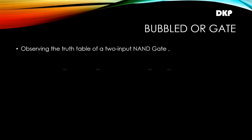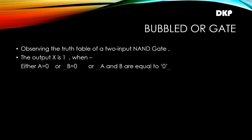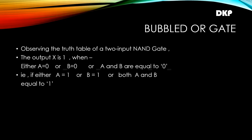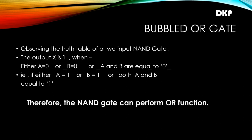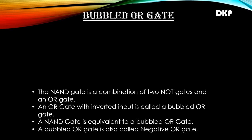First of all, let us see what is a bubbled OR gate. Observing the truth table of a 2-input NAND gate, the output x is 1 when either a equals 0 or b equals 0, or both a and b are equal to 0. That is, if either a equals 1 or b equals 1, or both a and b equal to 1. Therefore, the NAND gate can perform OR function.